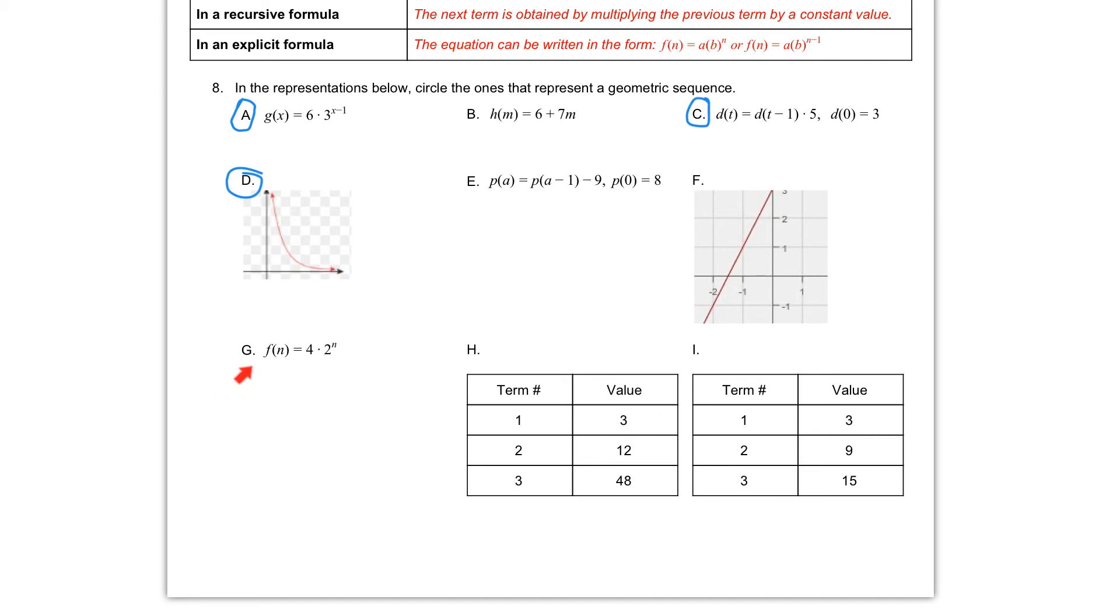In letter G, we have f of n is equal to 4 times 2 to the n. Again, that variable, that n up in our exponent indicates that we are multiplying by 2 each and every time. And that multiplying by 2, that multiplication every time indicates that we do have a geometric sequence. So we will circle G.